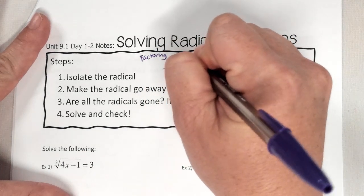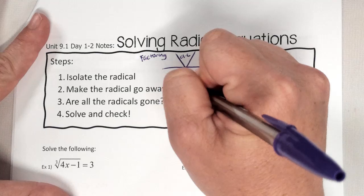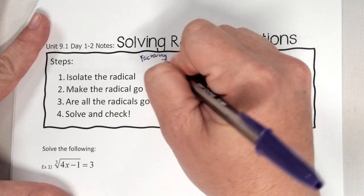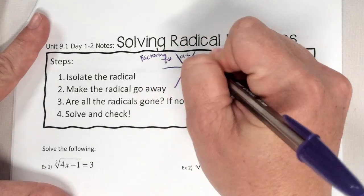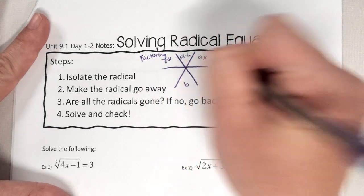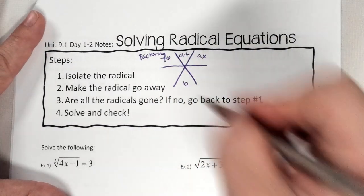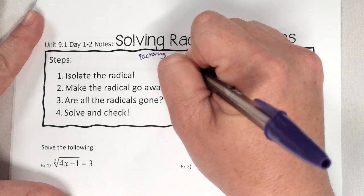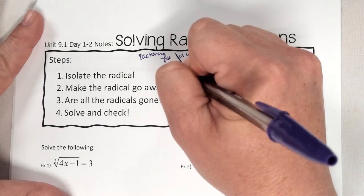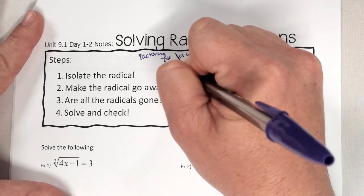This is your A times C, this is your B, this is AX. You're looking for what multiplies to give you this and adds to give you this.